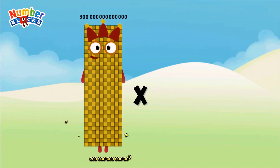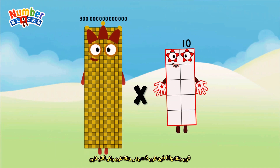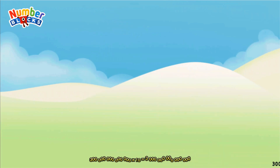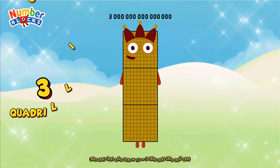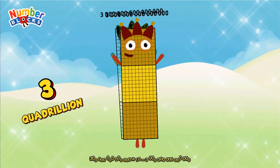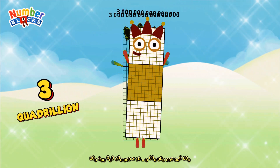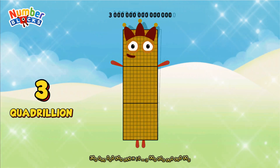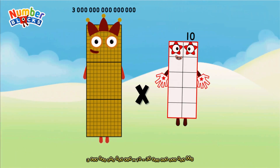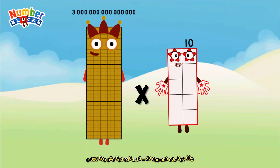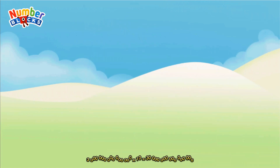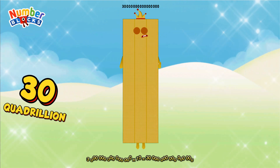300 trillion multiplied by 10 equals 3 quadrillion. 3 quadrillion multiplied by 10 equals 30 quadrillion.